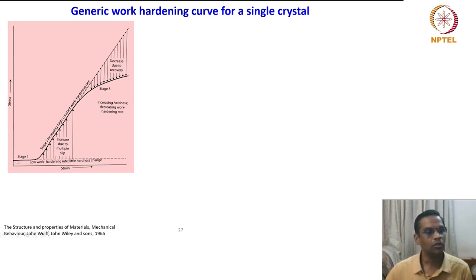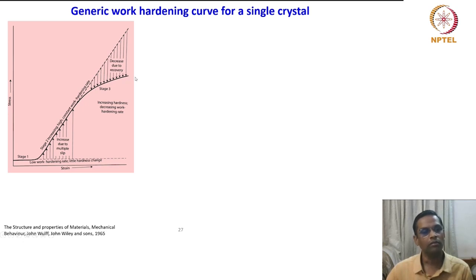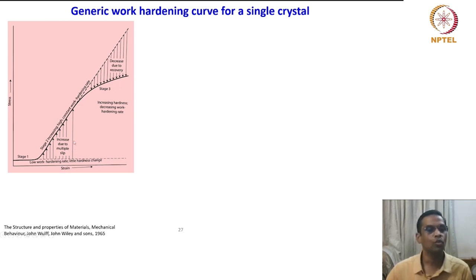This plot shows something called Stage 1. As the strain increases in the beginning, and then there is a steep increase in the stress, and after that it starts slowly coming down. It has about three stages: Stage 1, Stage 2, and then Stage 3.